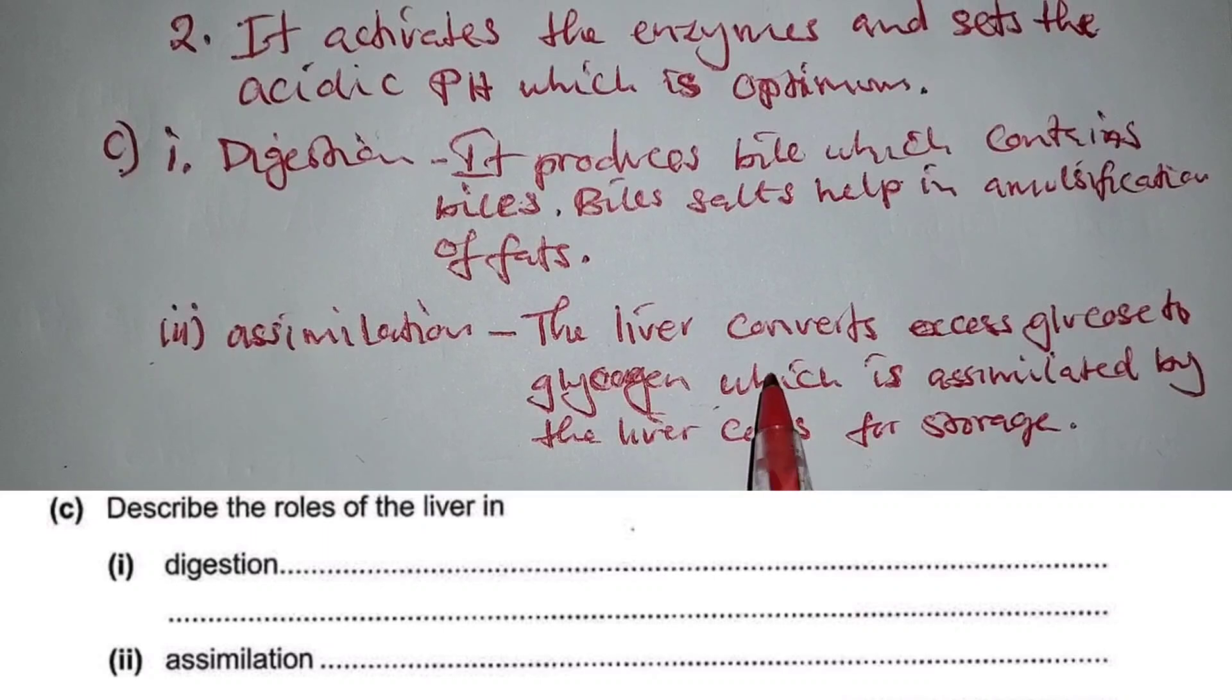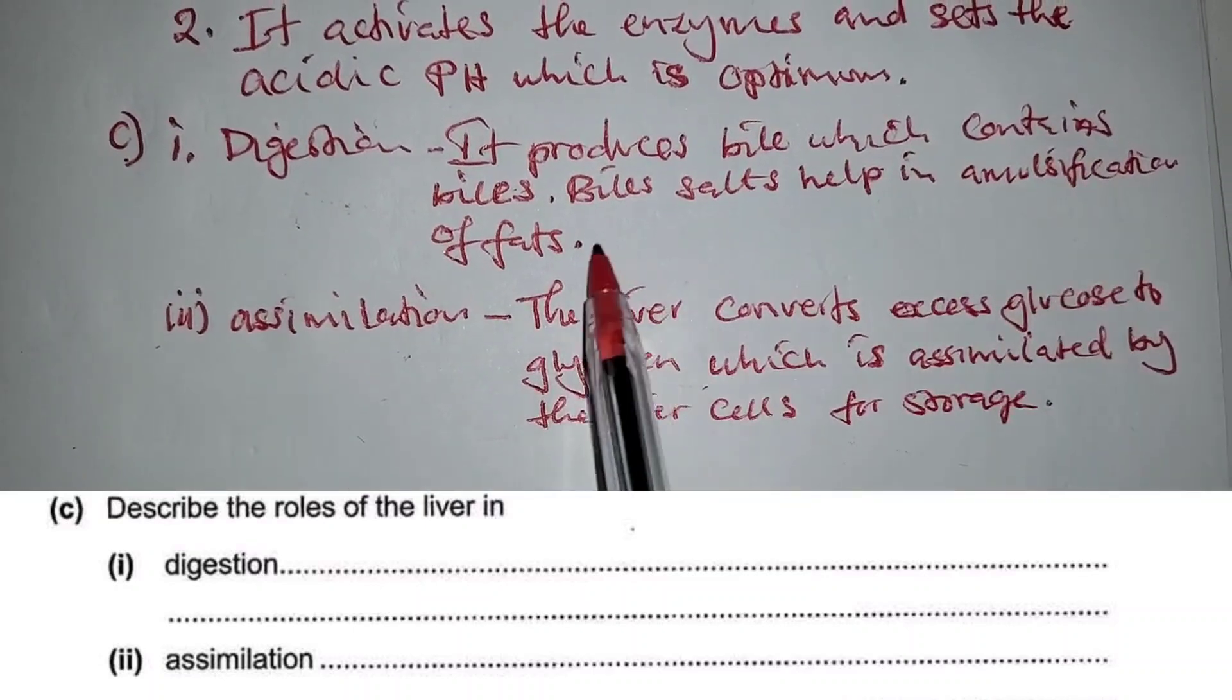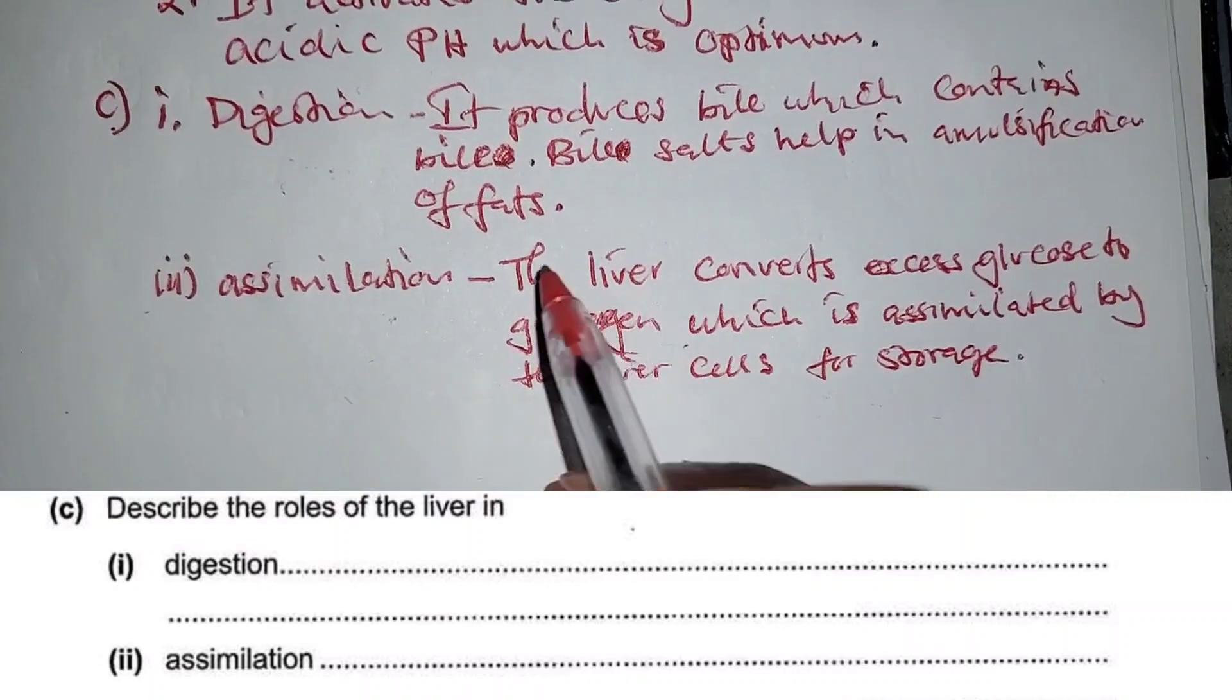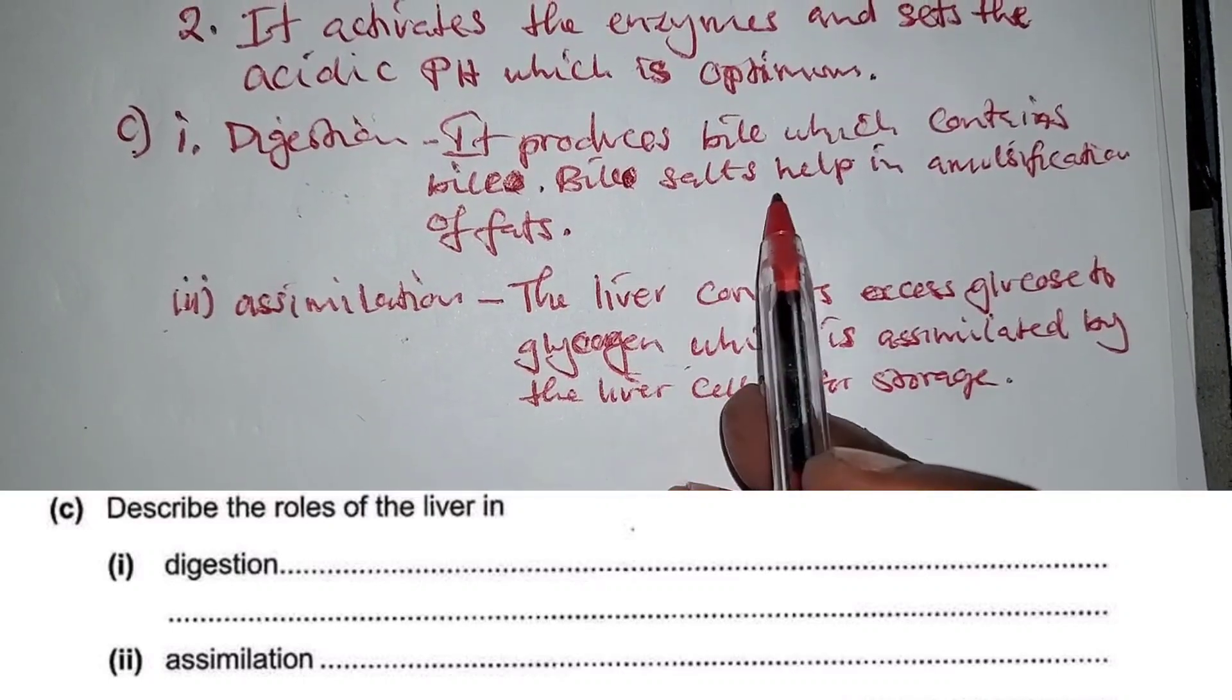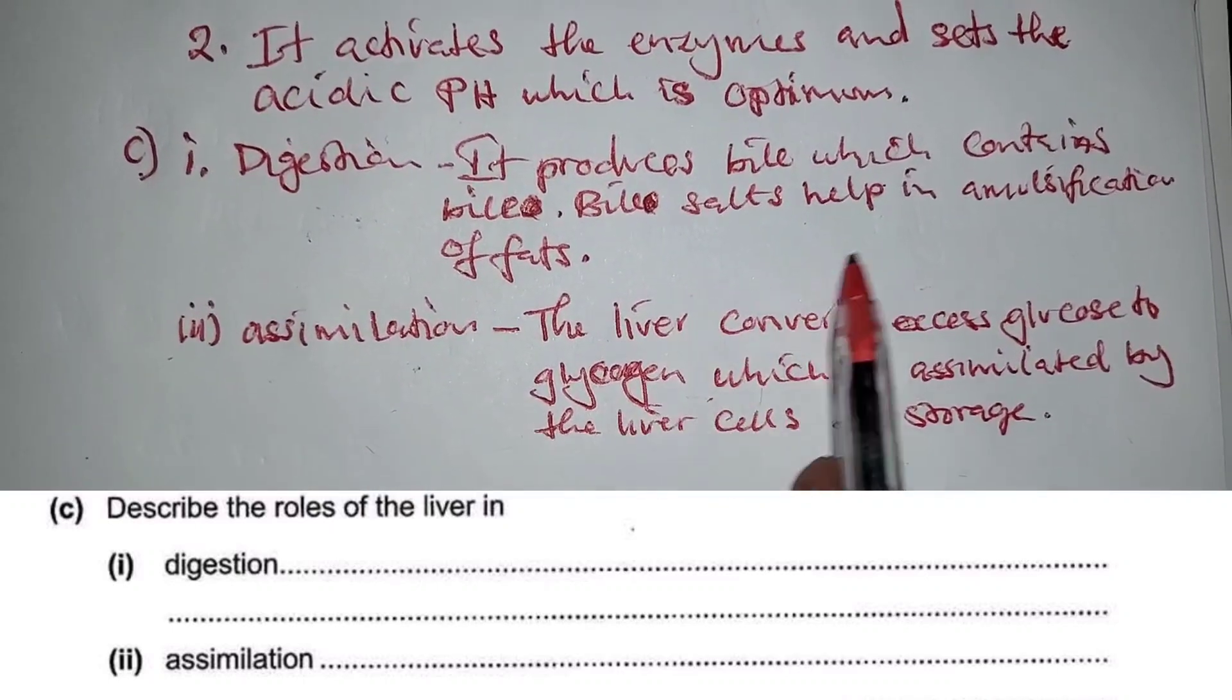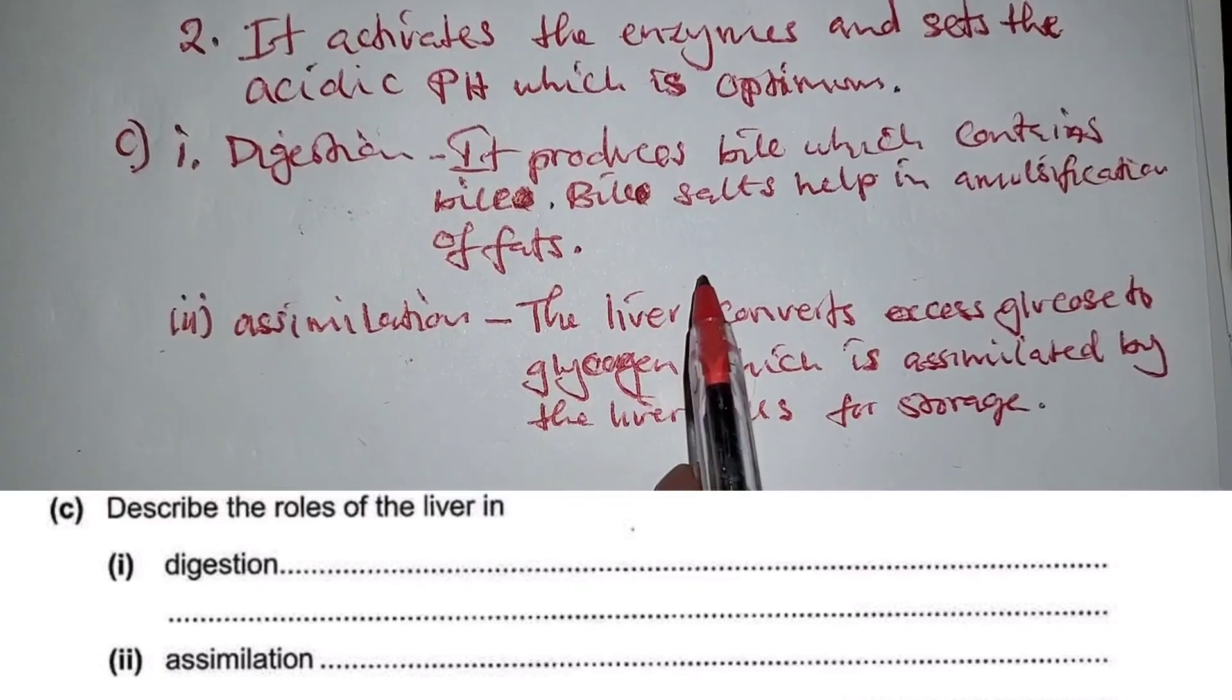They usually ask such questions: the role of the liver in digestion. It produces bile which contains bile salts. Bile salts help in emulsification of fats. Emulsification is the breaking down of large drops of fats into smaller droplets by an enzyme which is called lipase.